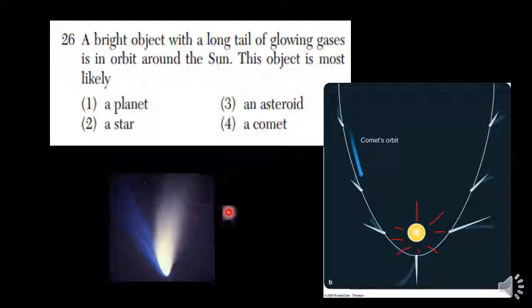So you can't tell which way the comet is going, but you can always tell which way the sun is. So in this case, the sun will be pointed down.